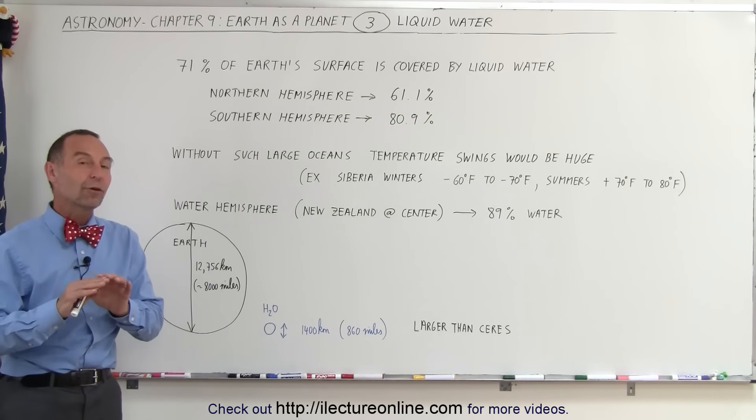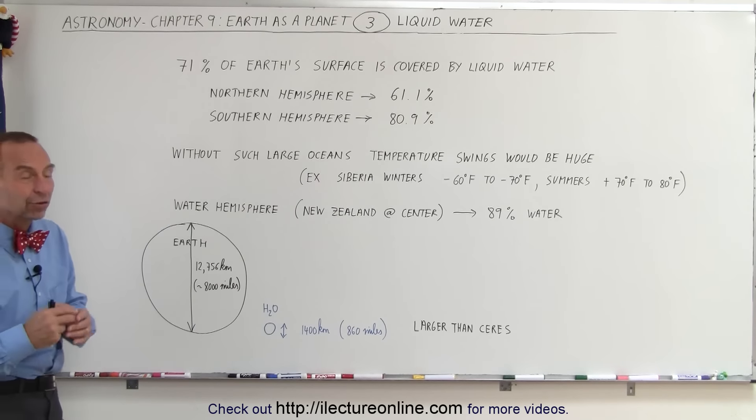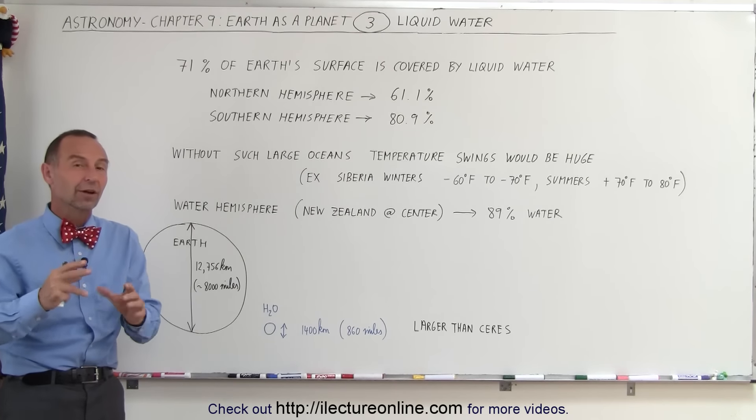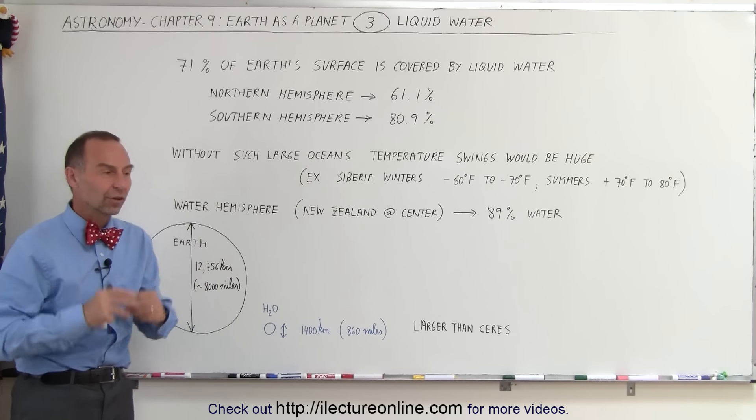So the temperature of the Southern Hemisphere is much more stable as compared to the Northern Hemisphere. The extremes between summer and winter are much more severe in the Northern Hemisphere than they are in the Southern Hemisphere.